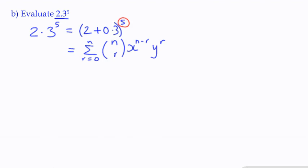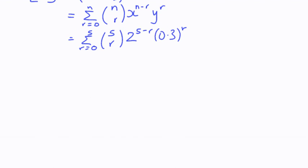In this case, n is 5. So we can say it's the sum of all the terms from r equals 0 to 5 of 5 choose r times 2 to the power 5 minus r times 0.3 to the power r. That's how we're going to set out our expansion. We've got 6 terms that we're going to write out.